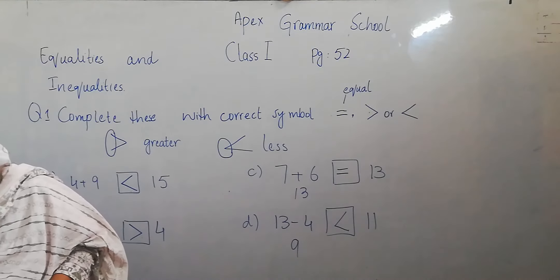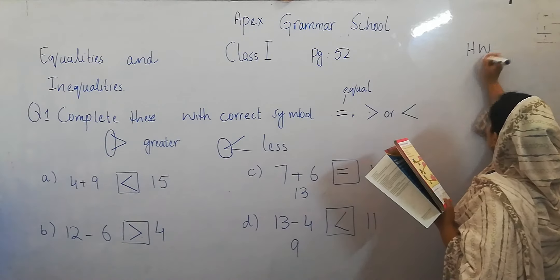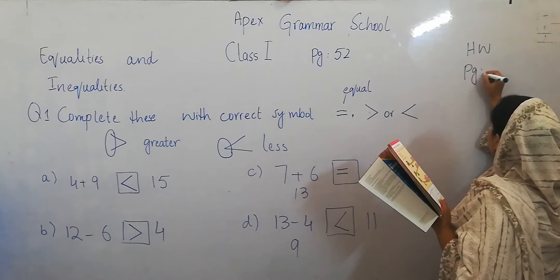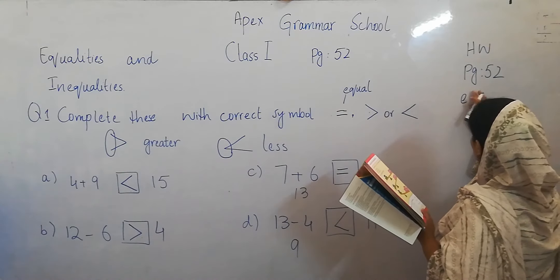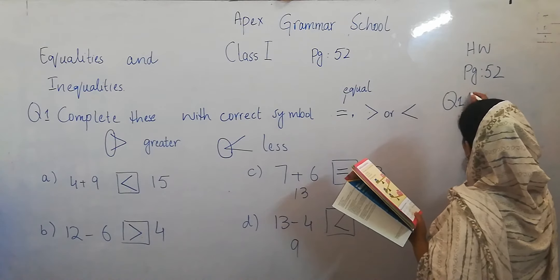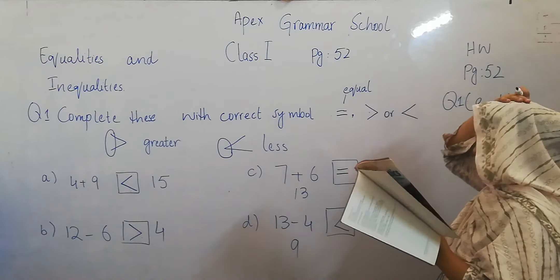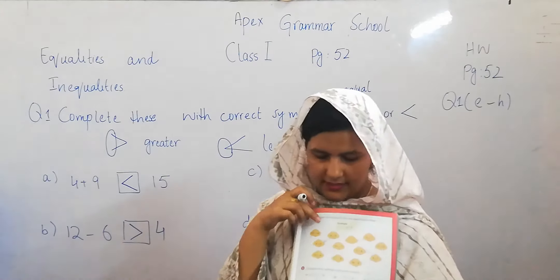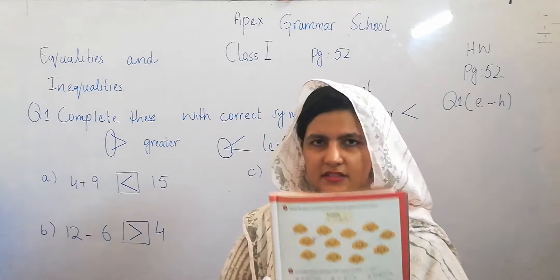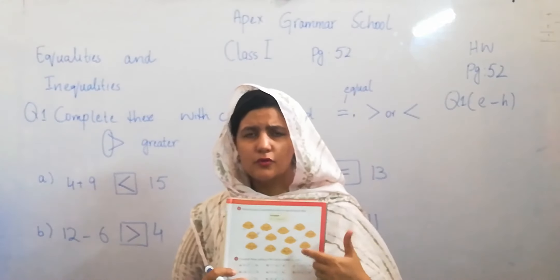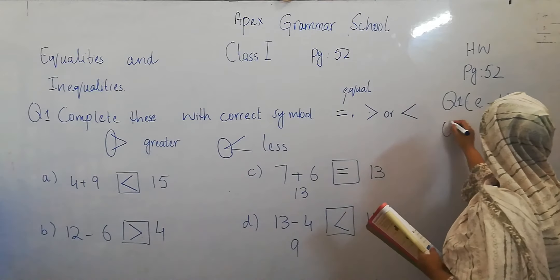The remaining parts are your homework. Page number 52, question number 1, parts E to H — this is your homework. Page number 53: you have to do plus or minus, match them, and complete in the same way. Question number 3 is the same as question number 1.